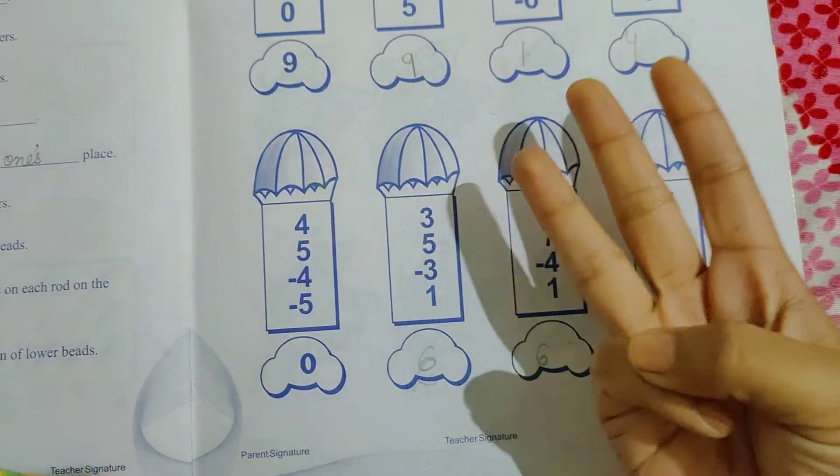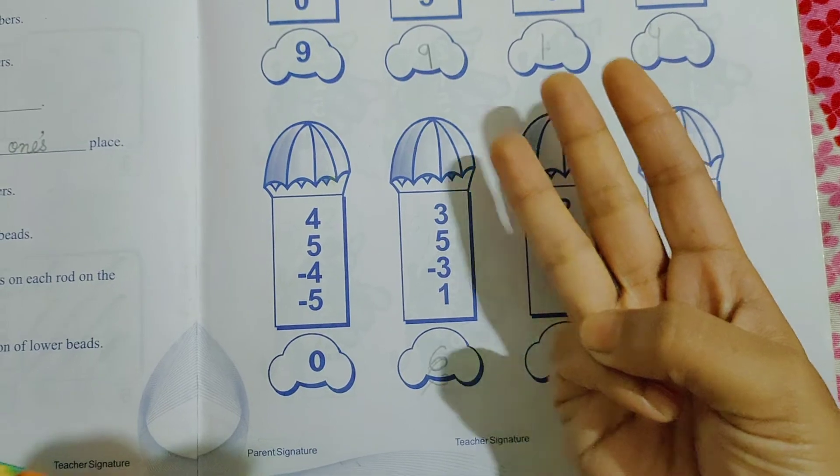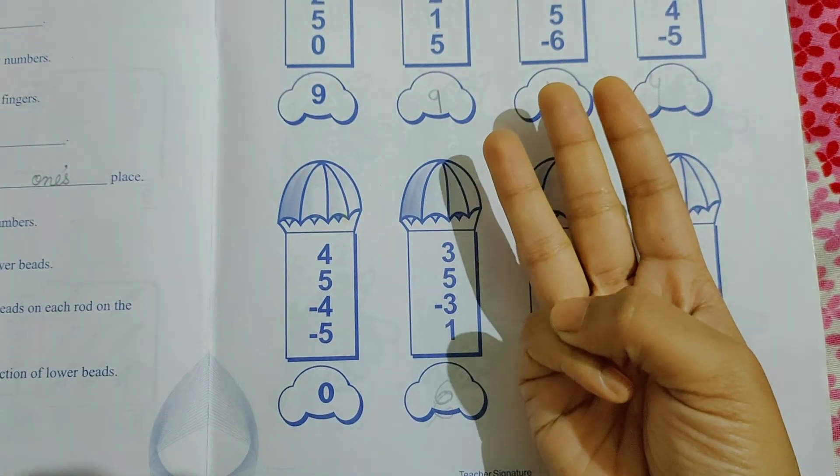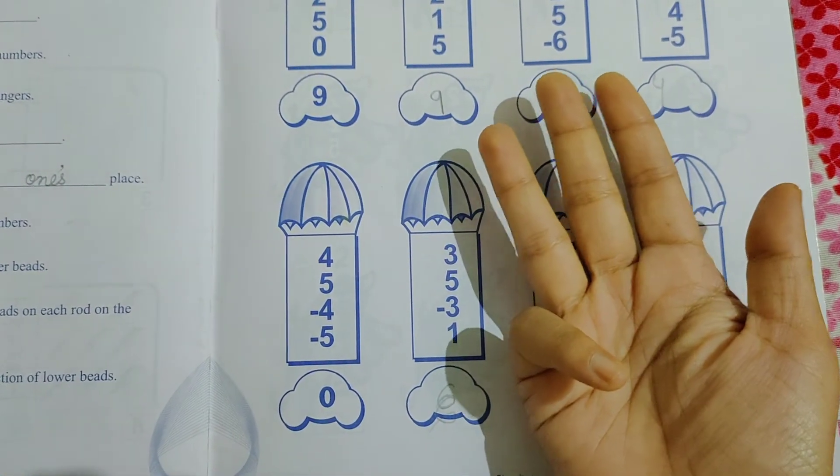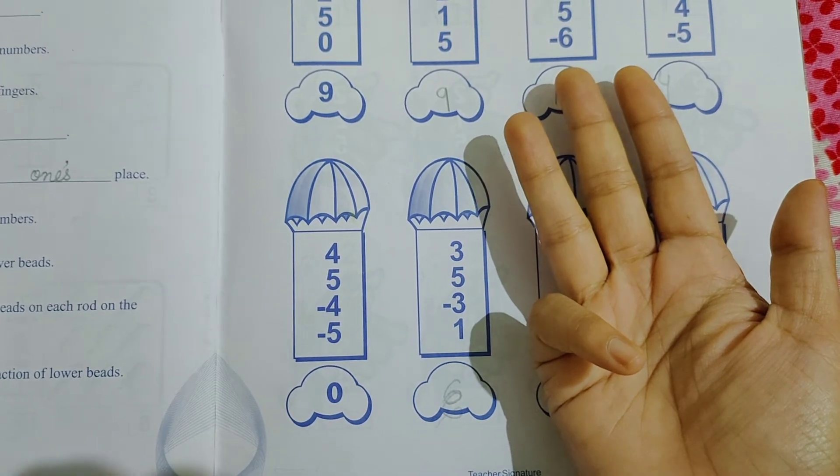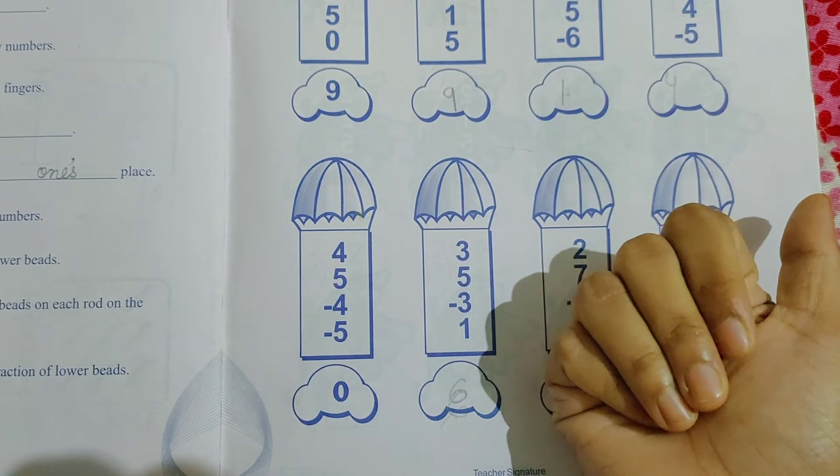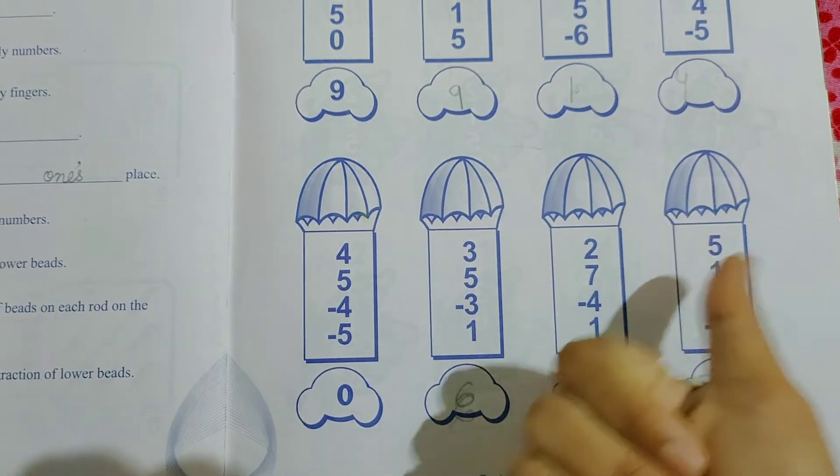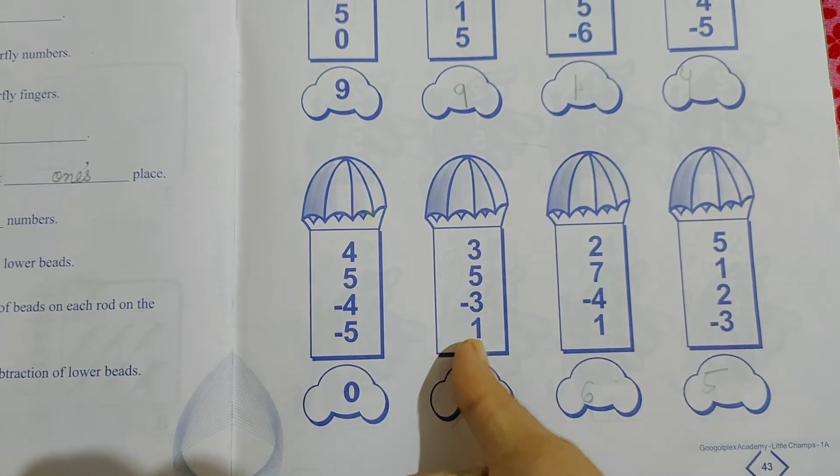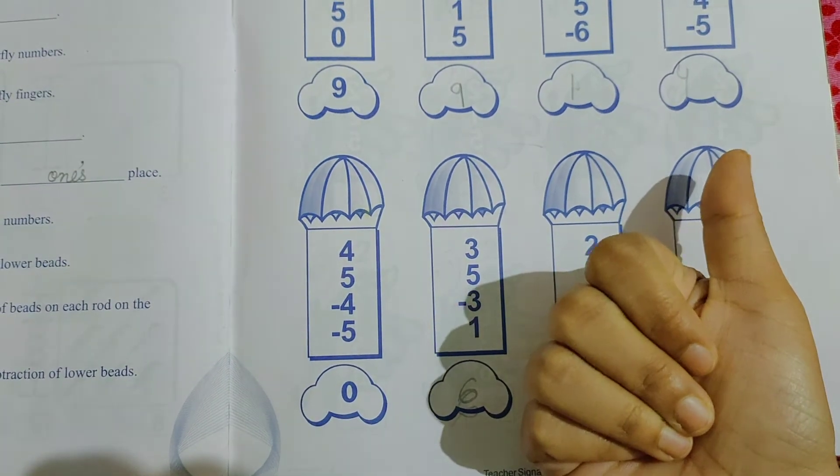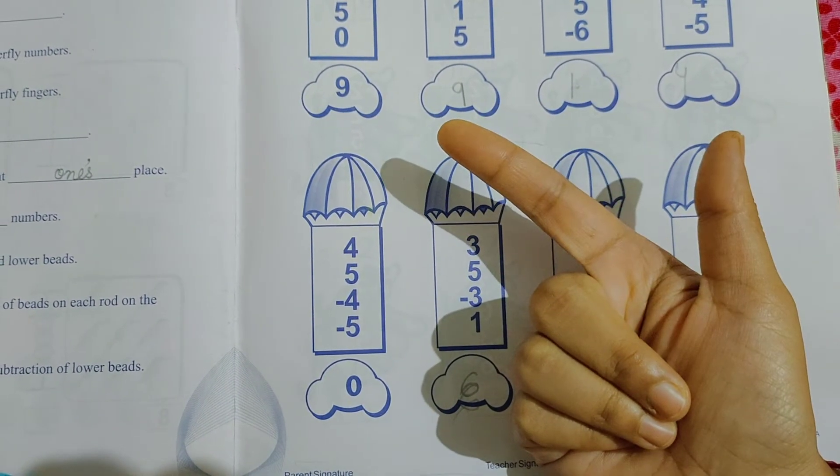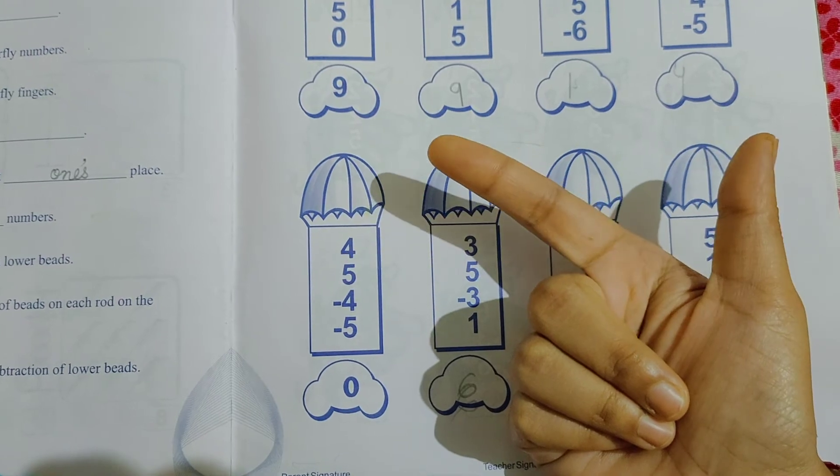Next question 3 plus 5. Thumb has value 5. So open your thumb. Now minus 3. 3 fingers close. Now plus 1 is there. Plus 1. So the answer is 5. This is 1. 5 plus 1. This is 6.